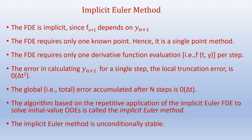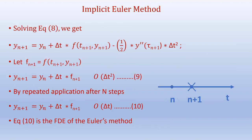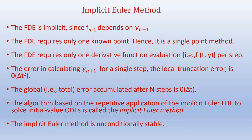To summarize, the FDE is implicit since f n plus 1 depends on y n plus 1. If you look at the third line from the top, f n plus 1 is a function of t n plus 1 and y n plus 1, so f n plus 1 depends on y n plus 1. This FDE requires only one point, as in the explicit Euler method — hence it is a single-point method. The FDE requires only one derivative function evaluation, that is f of t comma y, per step.